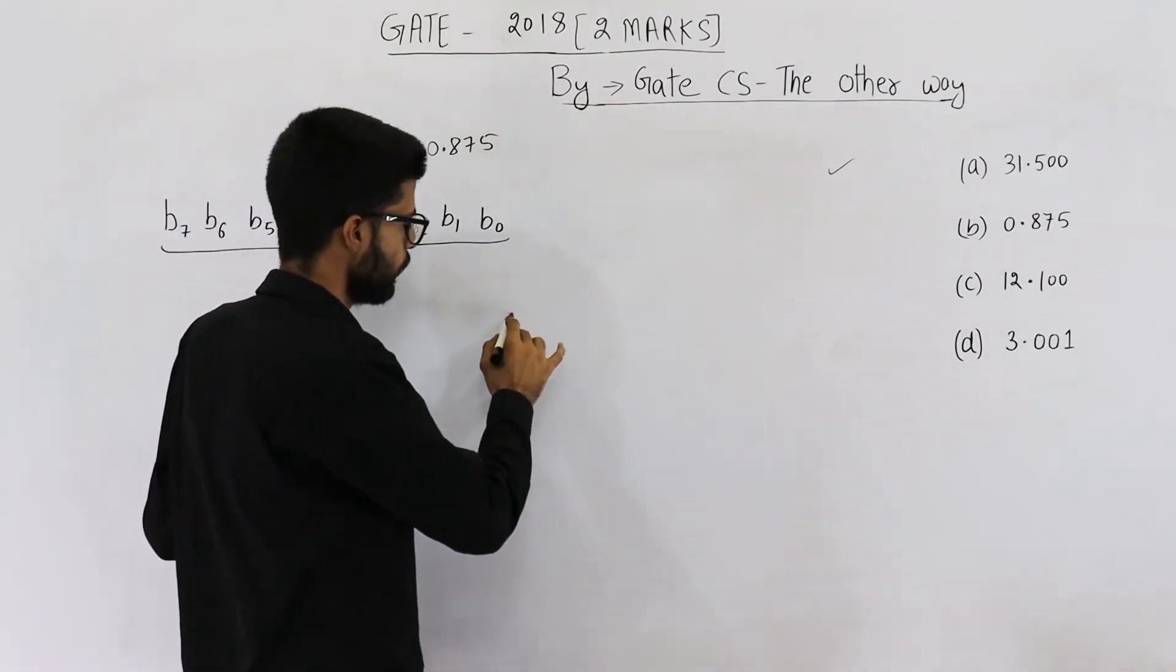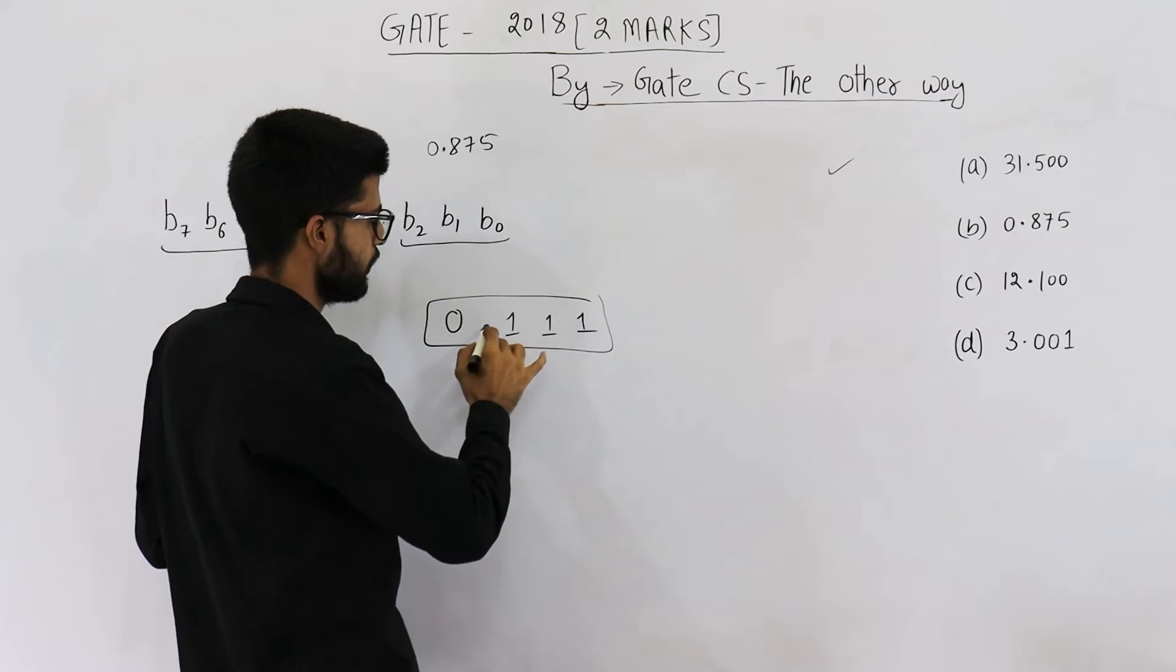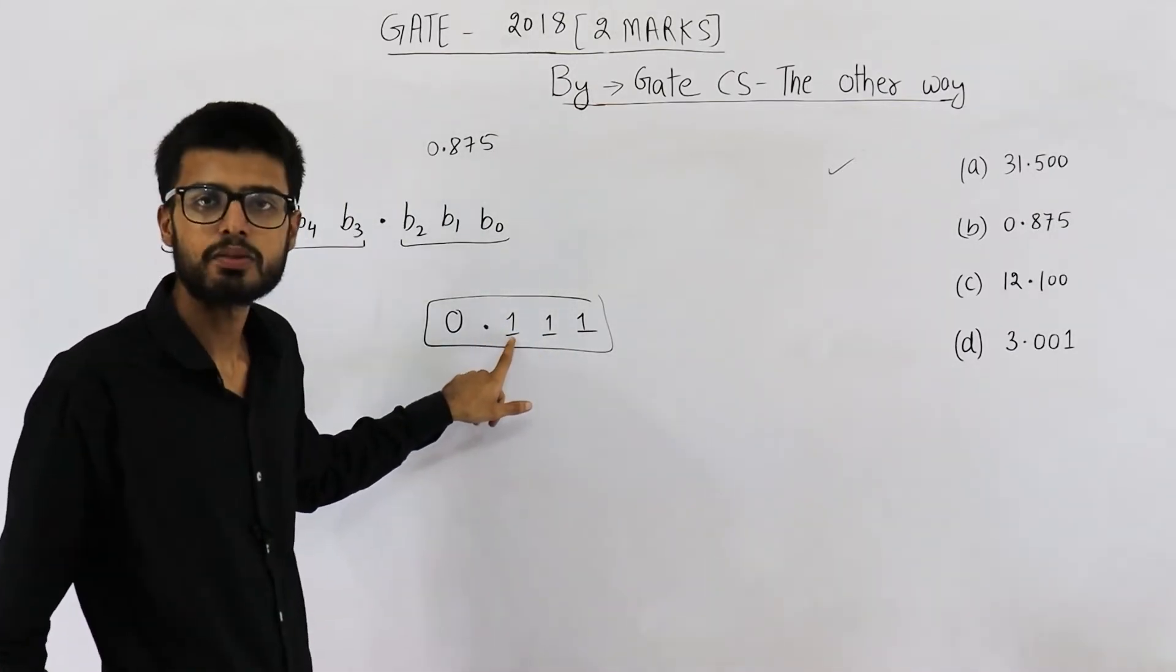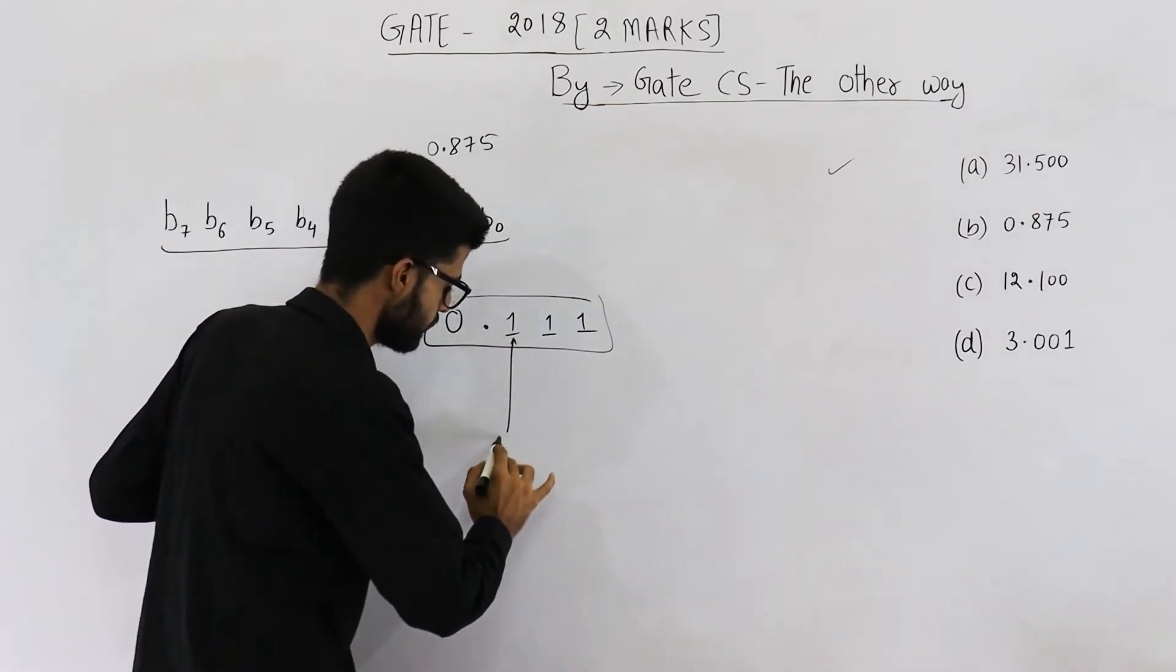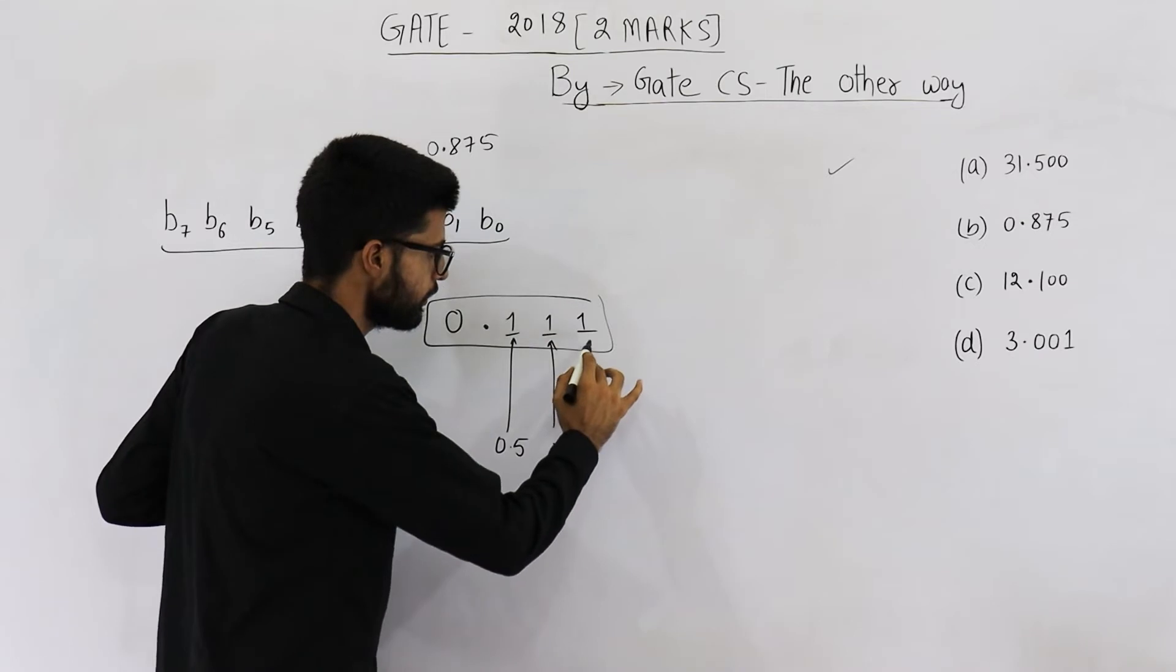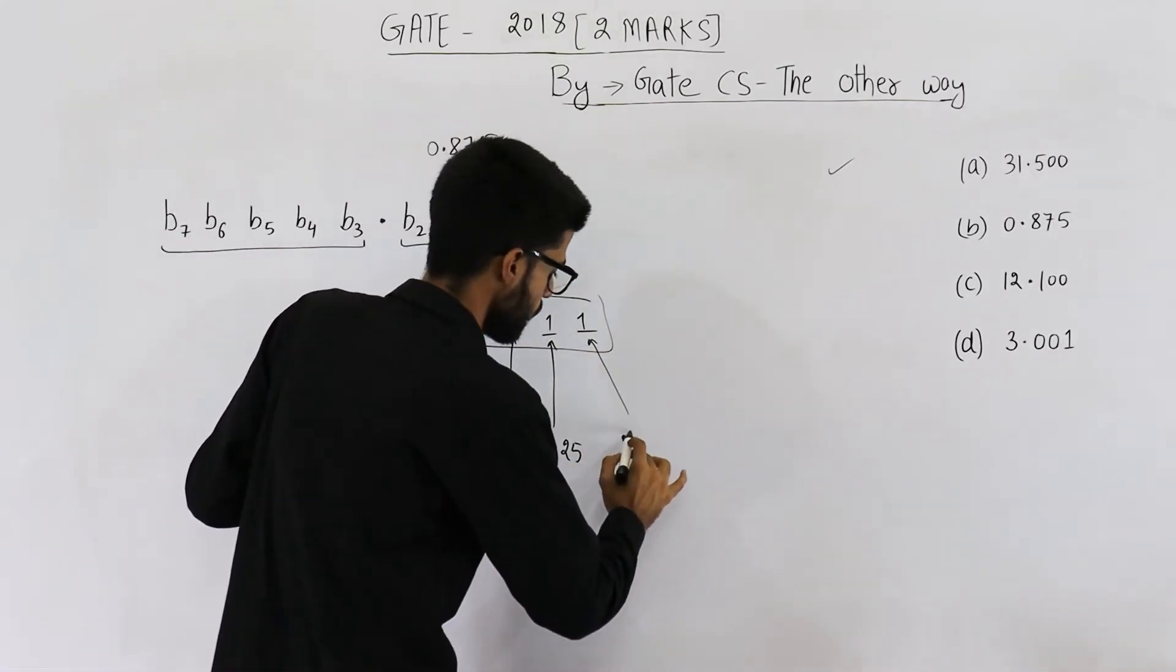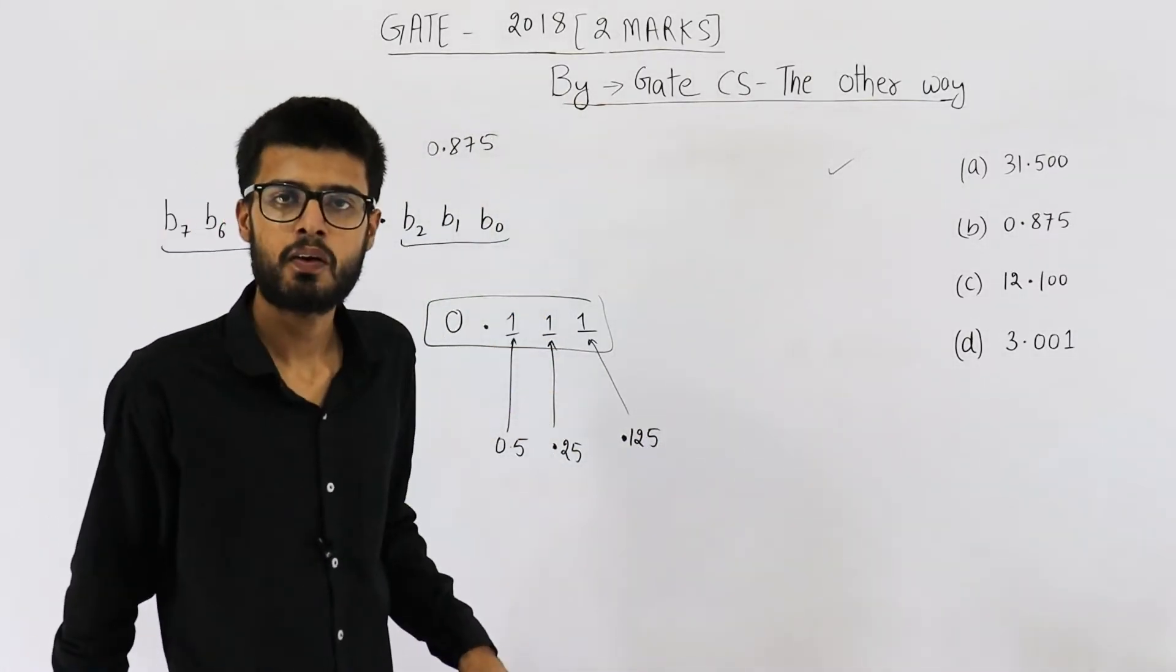Yes, we can represent it. 1, 1, 1. This is how you write 0.875. How do I know it is 0.875? See, value of this bit is 0.5. This one is for 0.5. This one is for half of 0.5, which is 0.25. This one is for half of 0.25, which is 0.125.